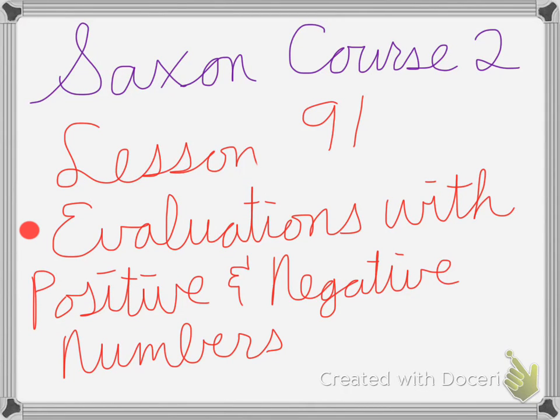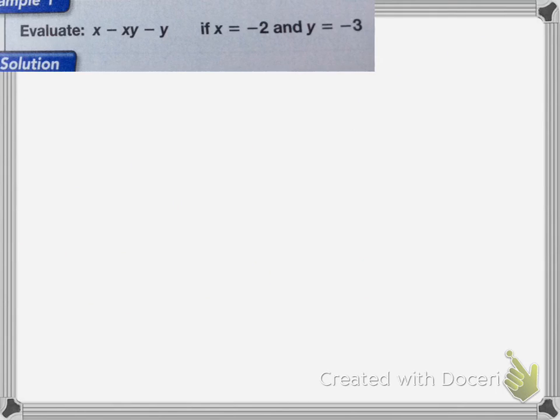Hey, Saxon Course 2, Lesson 91 is on evaluations with positive and negative numbers. It wants us to evaluate this equation if x equals negative 2 and y equals negative 3.